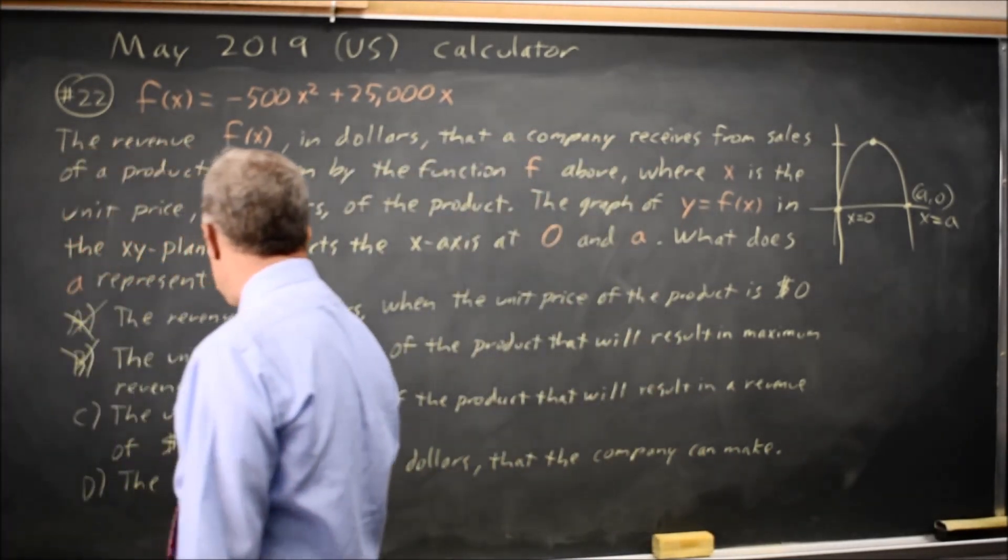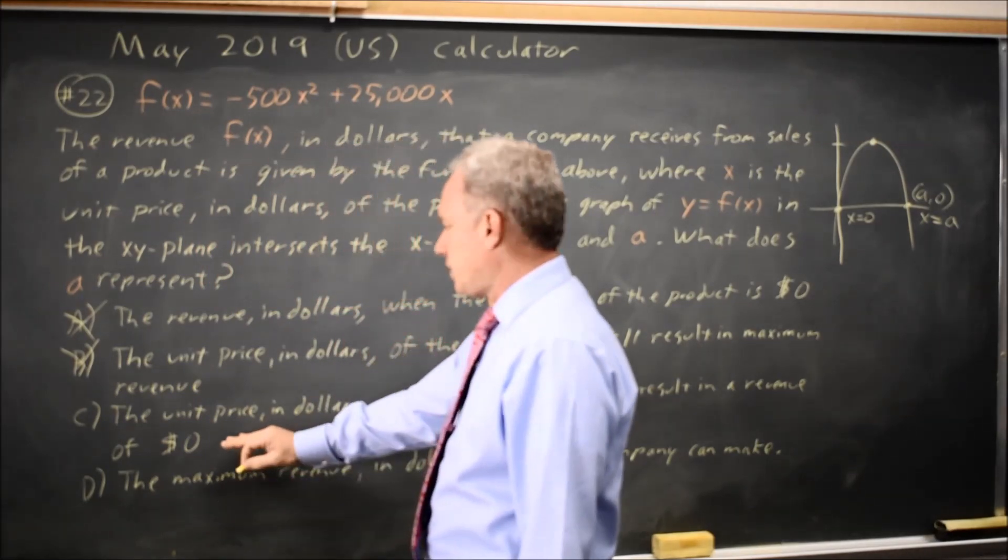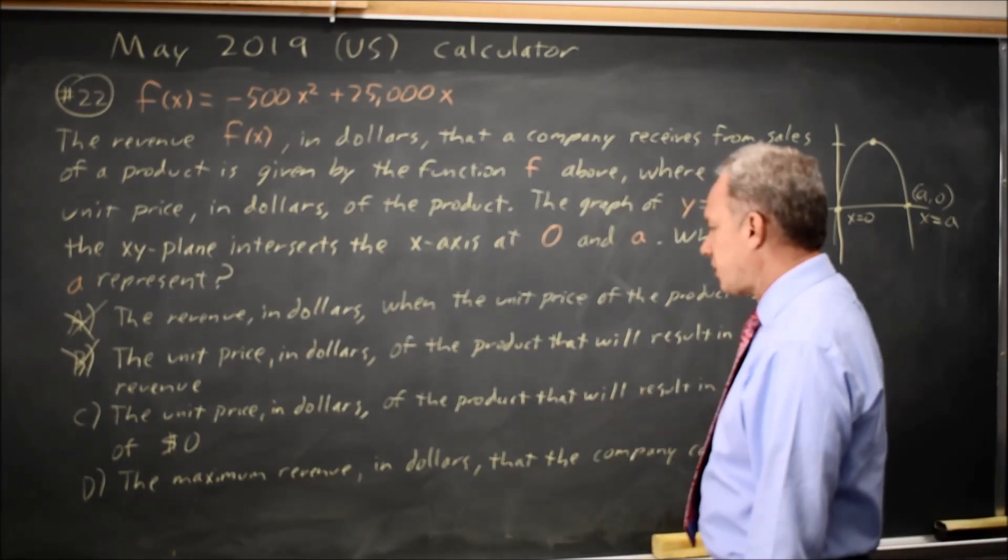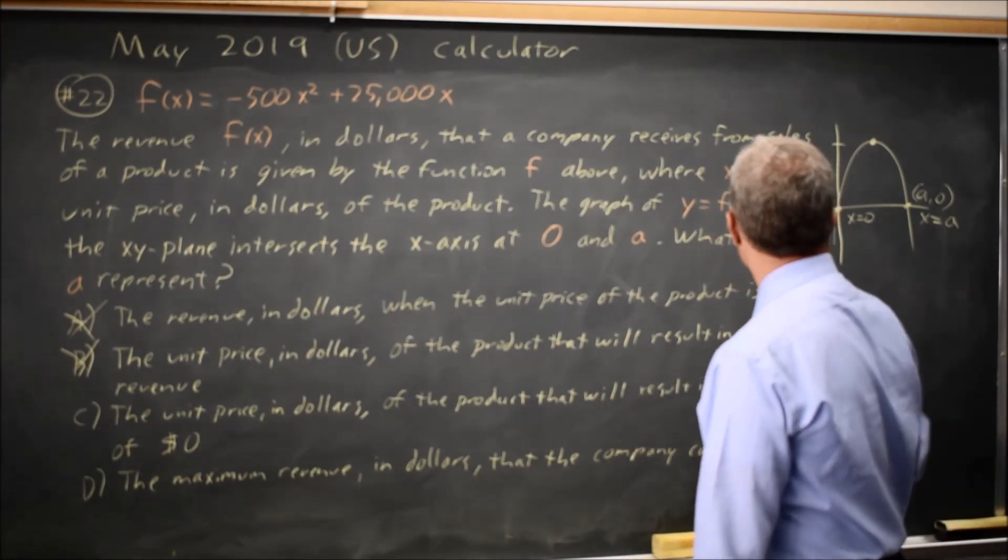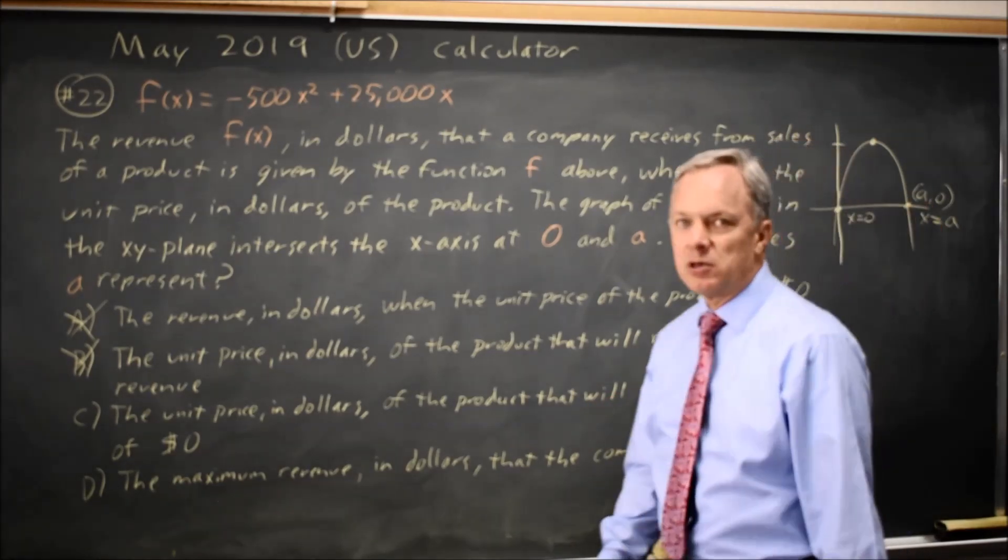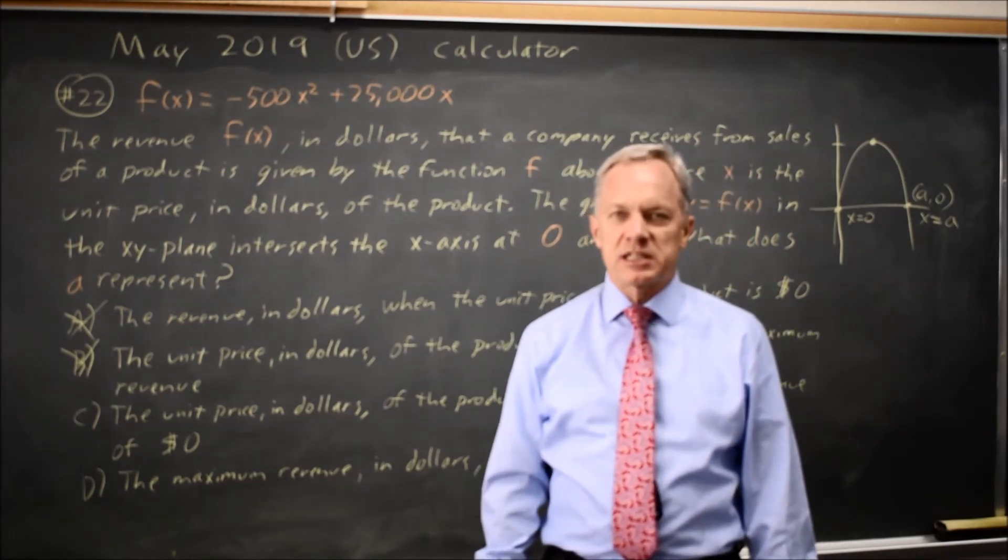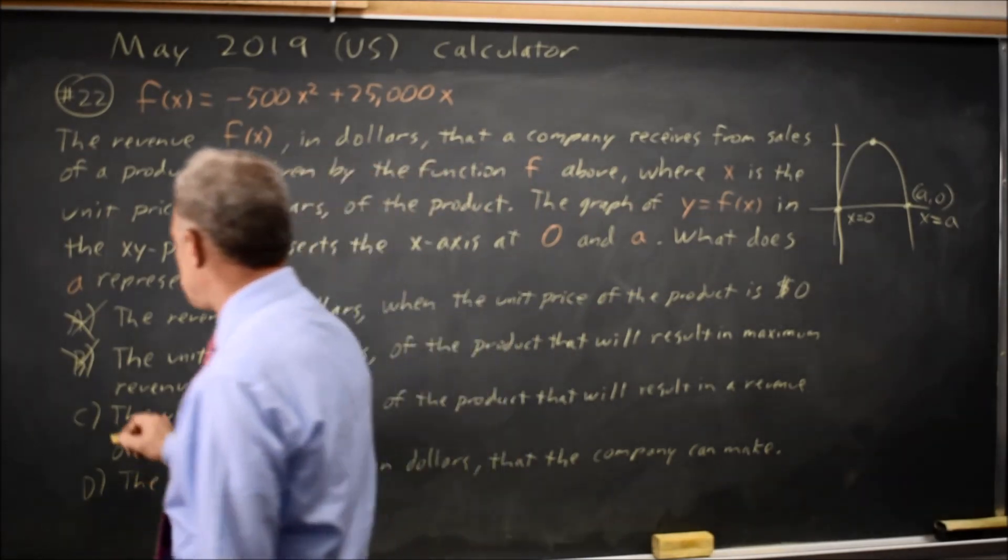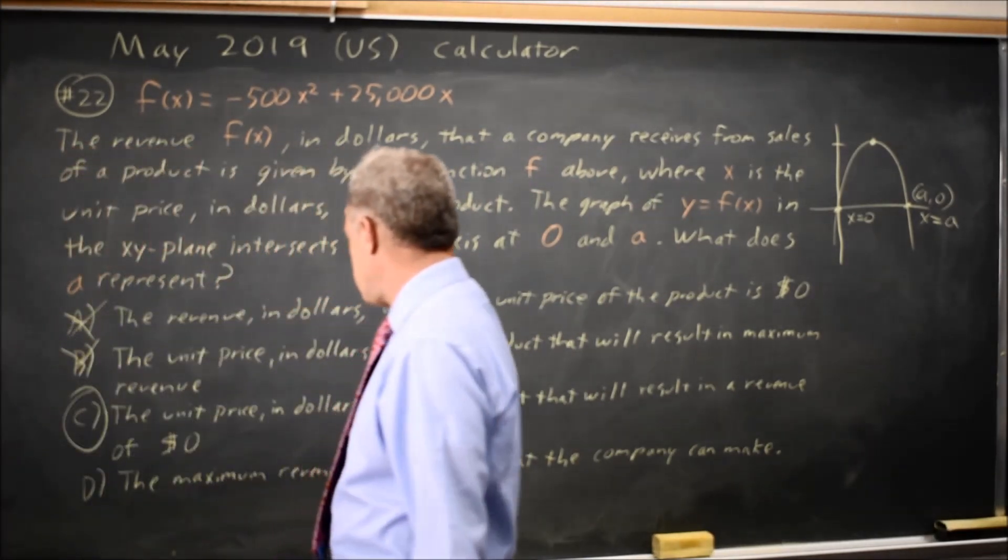Choice C is unit price, and again the x coordinate is unit price, that could be right, of the product that will result in a revenue of 0 dollars. Since the y value is 0 when x is A, yes, that is the unit price that results in a revenue of 0 dollars, so choice C is correct. But let's read the last choice.